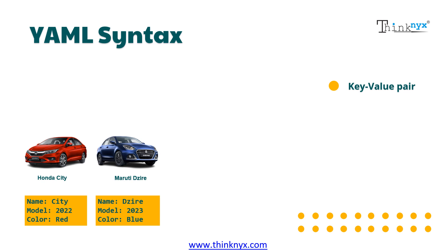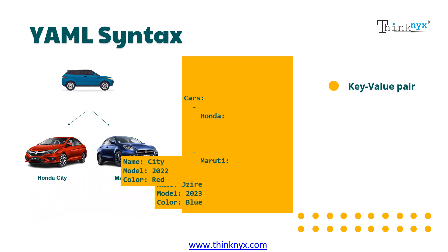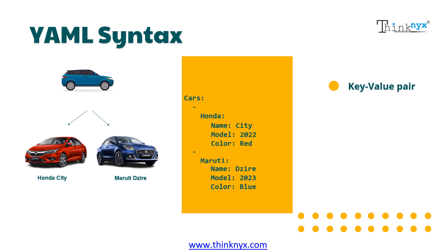Now we do the same for the other car, Desire. These two cars belong to the category of cars, so we can make a list named cars consisting of Honda and Maruti. This is how we represent lists in YAML. We shall also add the properties of each car inside the elements Honda and Maruti. We have to have proper indentation in YAML. The list belongs to cars, for which we have provided two spaces before the hyphen. For the elements Honda and Maruti, we have provided four spaces. Similarly, for properties of Honda and Maruti, we have provided six spaces. So we have kept two spaces after each hierarchy.